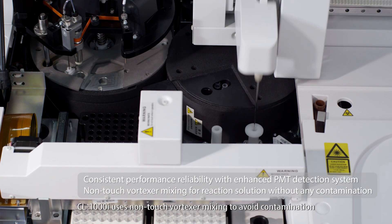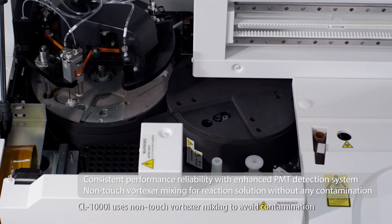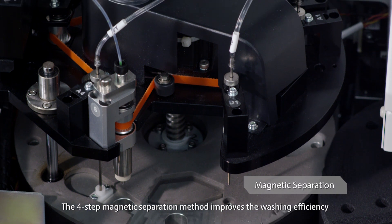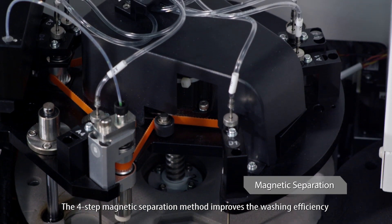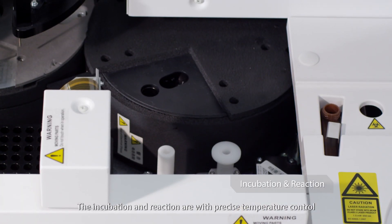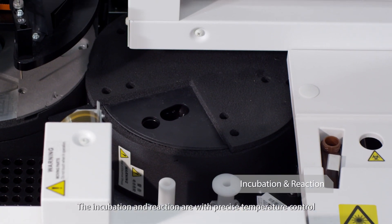CL1000i uses non-touch vortexer mixing to avoid contamination. The four-step magnetic separation method improves the washing efficiency and reduces interference. The incubation and reaction are with precise temperature control.